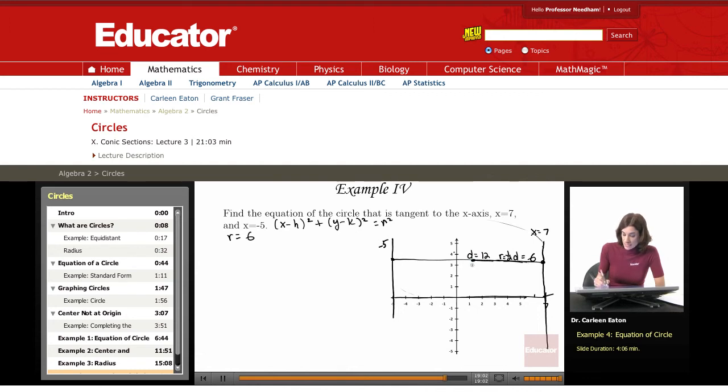So again, that's because the length of the radius is 6. The distance between the center and this endpoint has to be 6. So 7 minus 6 is 1. So the radius is going to extend from there to there.